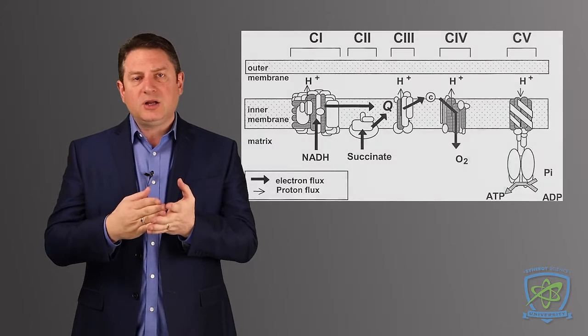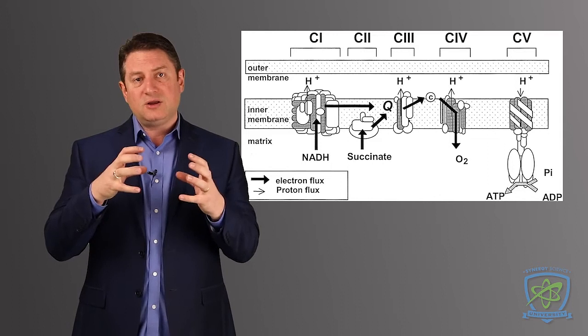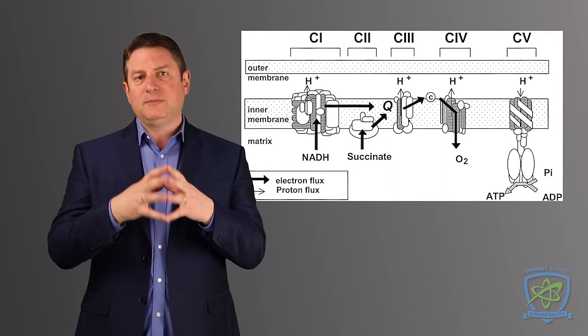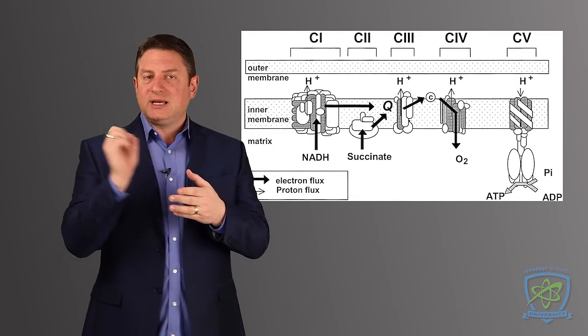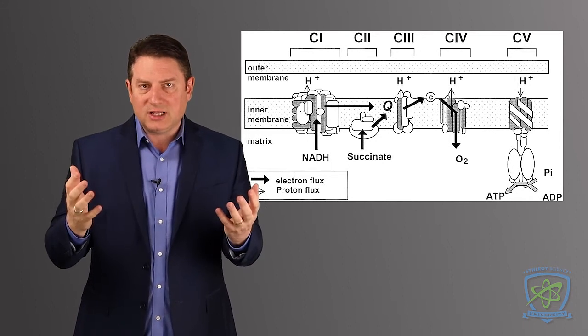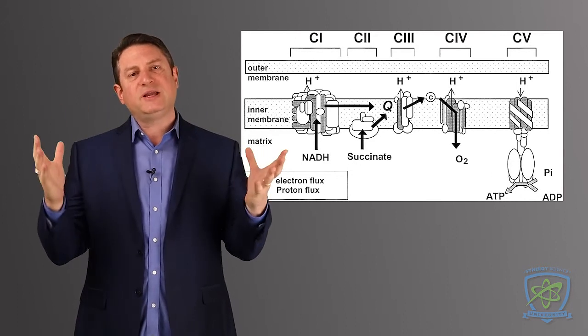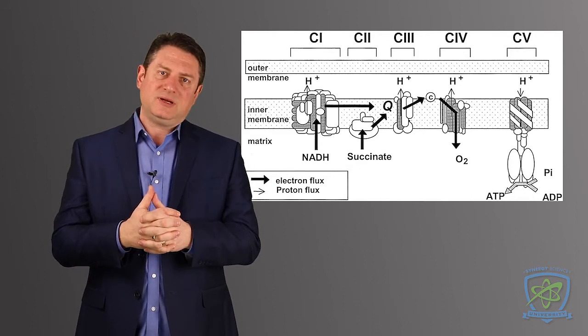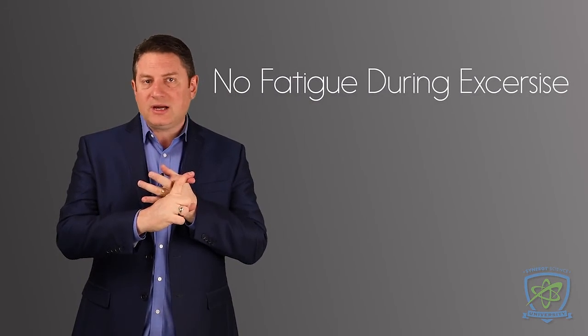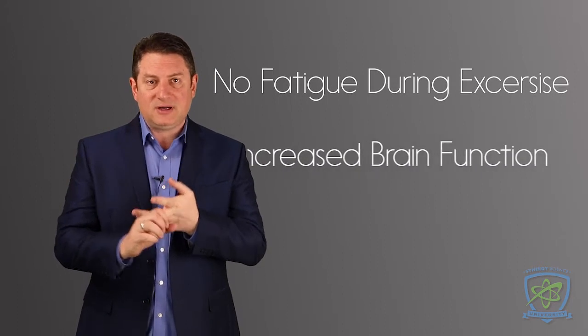Also, hydrogen is known to help the mitochondrial respiratory chain in the body. Now, this is critical because this is where your energy is produced in the body, the mitochondria. So if we can have hydrogen signaling through catalase regulation, not to have hydroxyl radicals produced in the body, then we have cleaner energy and we don't have fatigue. These are some of the major benefits of hydrogen: no fatigue when we're exercising or working out or participating in sporting events, increased brain function.